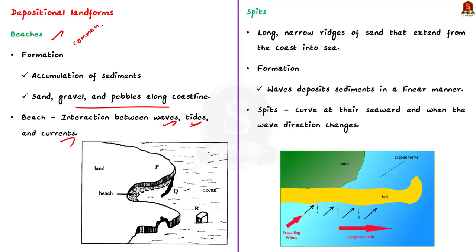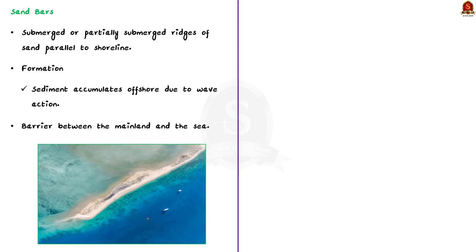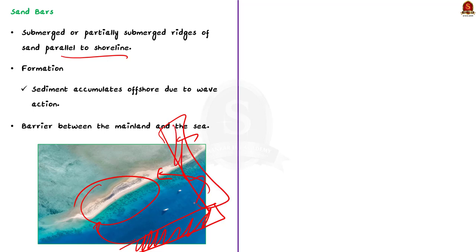The second depositional landform is spits. Spits are long, narrow ridges of sand that extend from the coast into the sea. They are formed when waves carry sediment along the coastline and deposit it in a linear manner. Spits often curve at their seaward end due to changes in wave direction. The third one is sandbars — submerged or partially submerged ridges of sand parallel to the shoreline. They form when sediment accumulates offshore due to wave action and act as a barrier between the mainland and the sea. The main difference between spits and bars is that spits are perpendicular to the coast while bars are parallel.